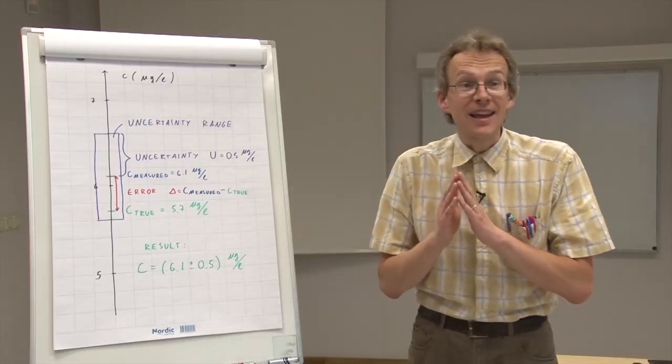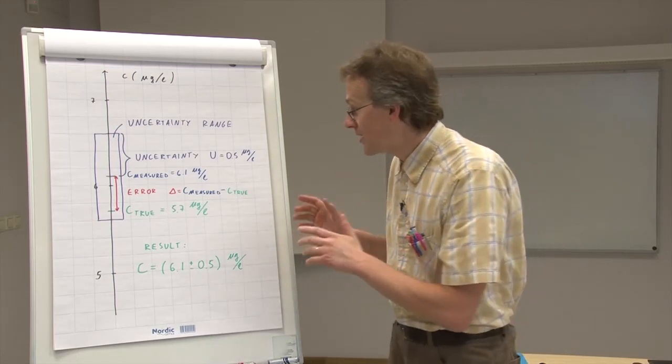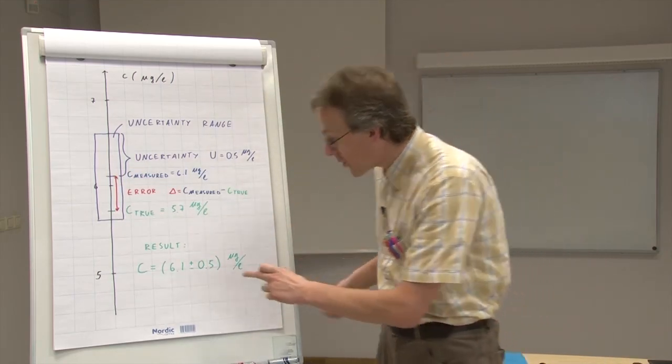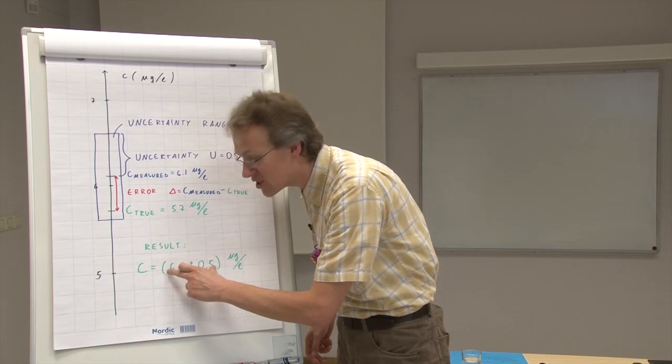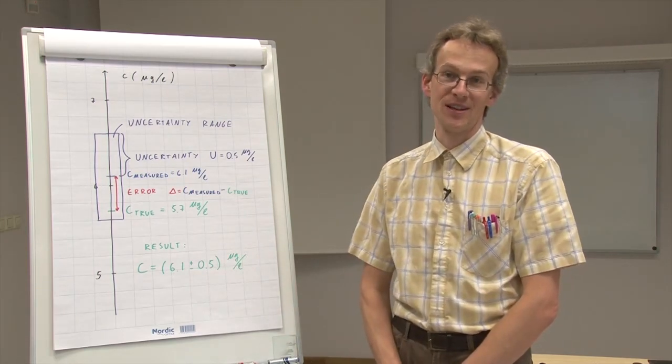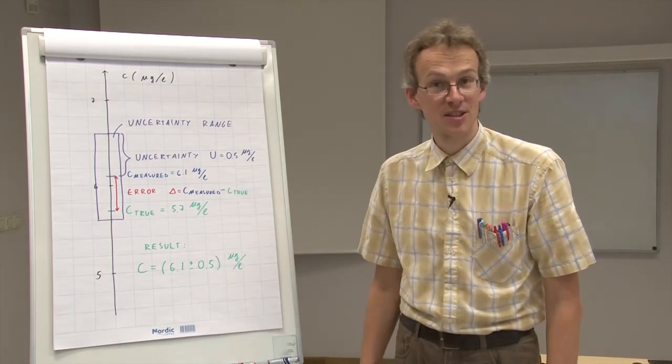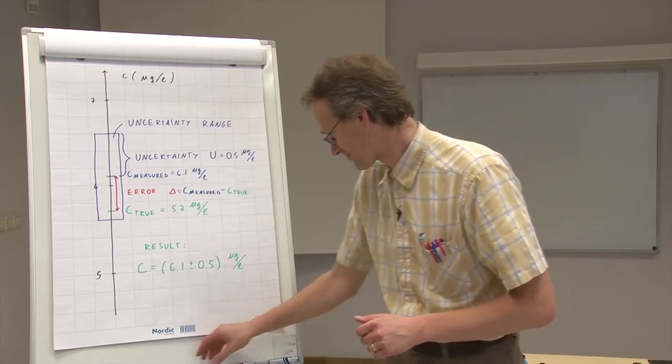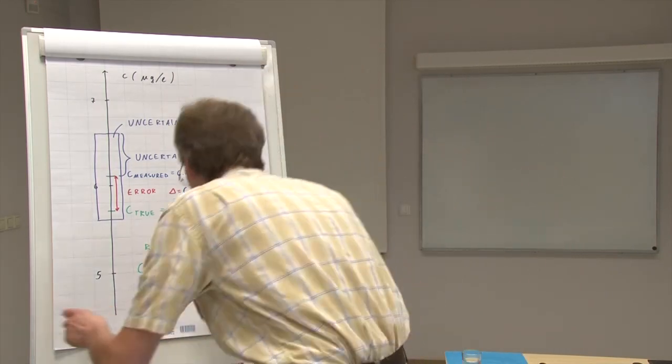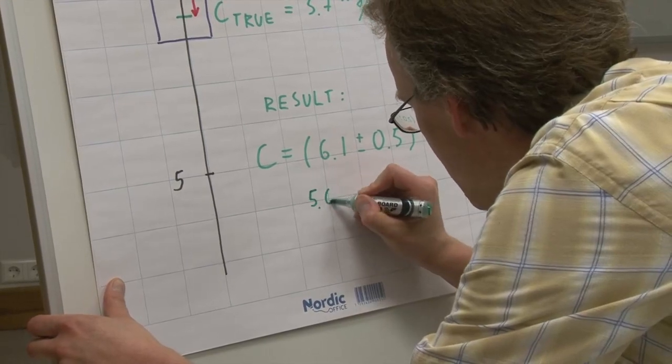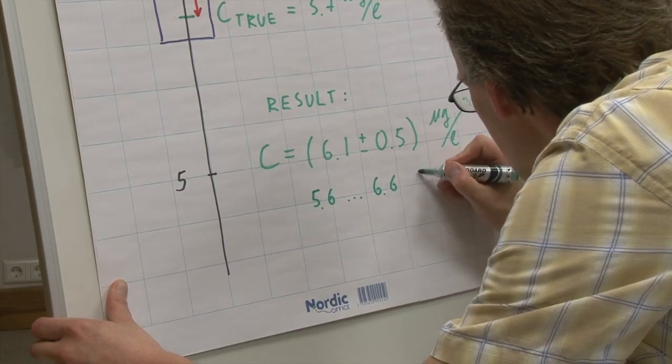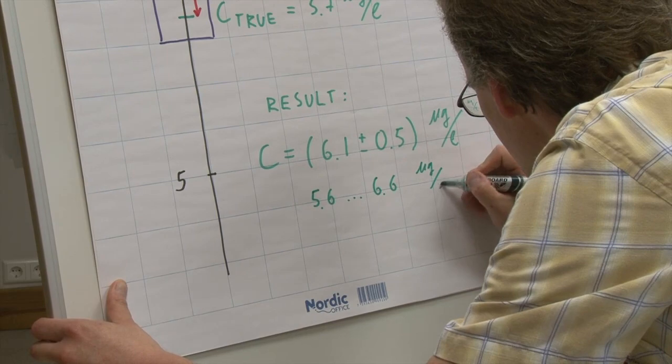So, instead of trying to give the exact true value or the difference from the true value, which we cannot do, we give this range, and this range means that with high probability the true value lies within this range. So, this result tells to a person that looks at this result that the true value of lead in this water is between 5.6 and 6.6 micrograms per liter.